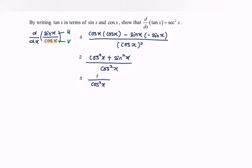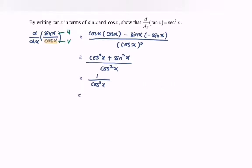By referring to the trigonometric ratio, as we all know, 1 over cos x is equal to sec x. So 1 over cos²x equals sec²x. Therefore, differentiating tan x with respect to x gives sec²x.